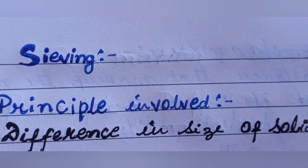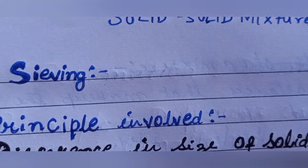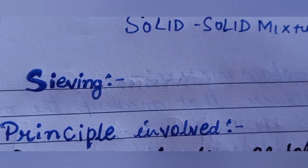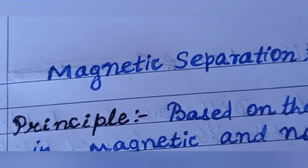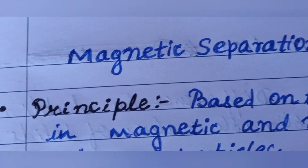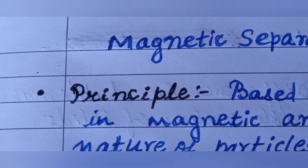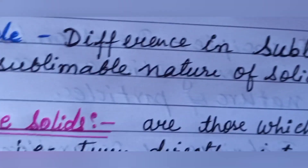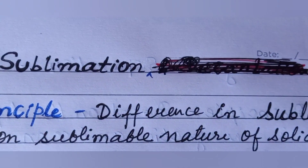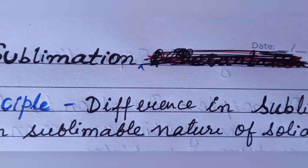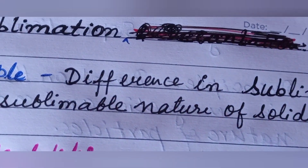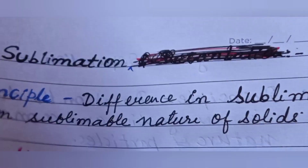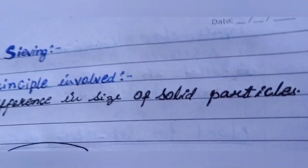Solid-solid mixtures can be separated by sieving, magnetic separation, hand picking, threshing, and sublimation. Let's see each of these and then we will look at them with the help of an example.